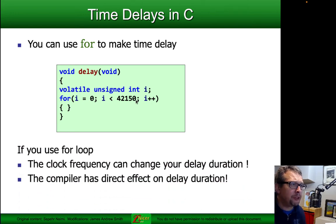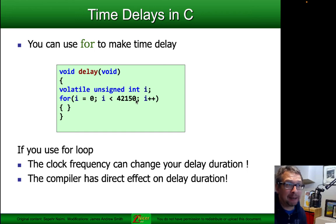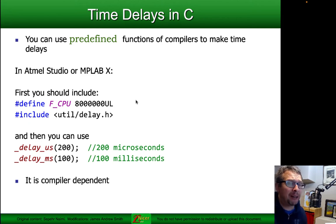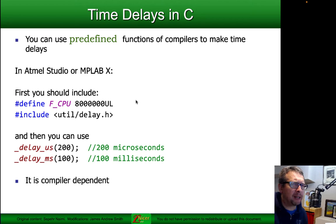However, the clock frequency can change the delay duration. So if you go from an 8 megahertz clock to a 16 megahertz clock or something along those lines, it can have an impact on whether this is an accurate representation of your delay. So in Atmel Studio or MPLAB X, which use GCC as the back end for the compiler, you can use predefined functions. These are available not only for the ATmega processors but other processor architectures as well — it's really dependent on your compiler and your IDE, so make sure you check.